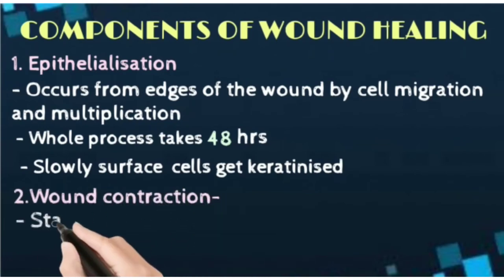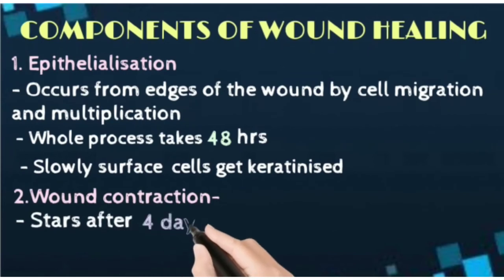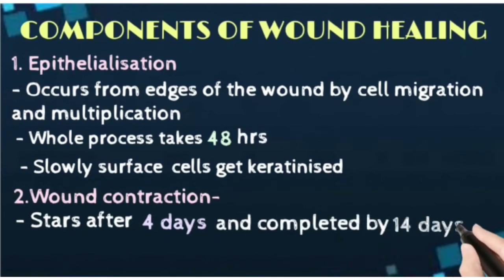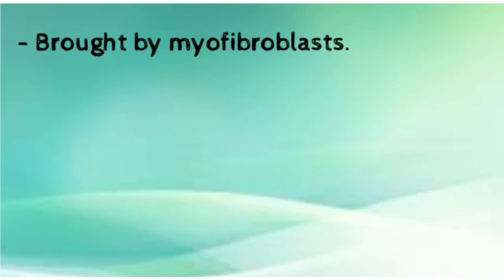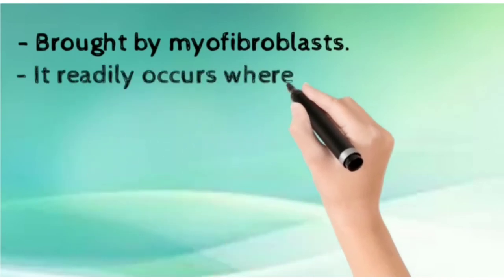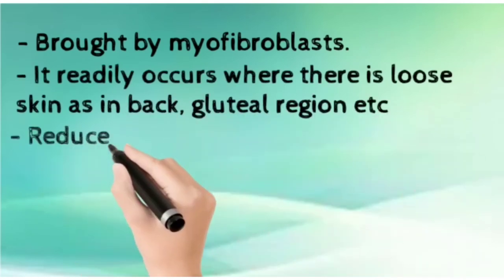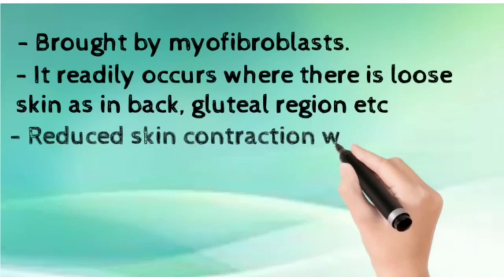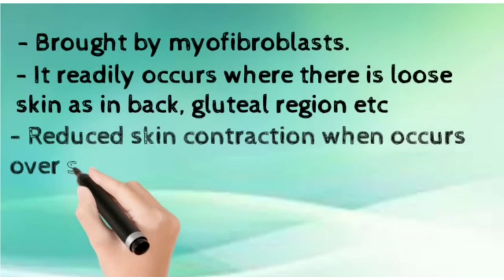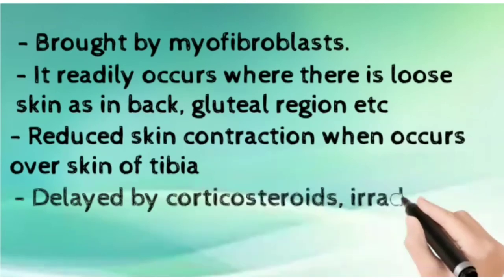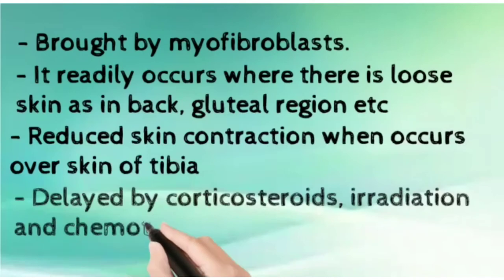The second step is wound contraction, which starts four days after injury and is completed within 14 days. It is brought about by myofibroblasts — specialized fibroblasts with contractile elements. Wound contraction readily occurs where there is loose skin. It is reduced over the skin of the tibia, and can be delayed by corticosteroids, irradiation, and chemotherapy.